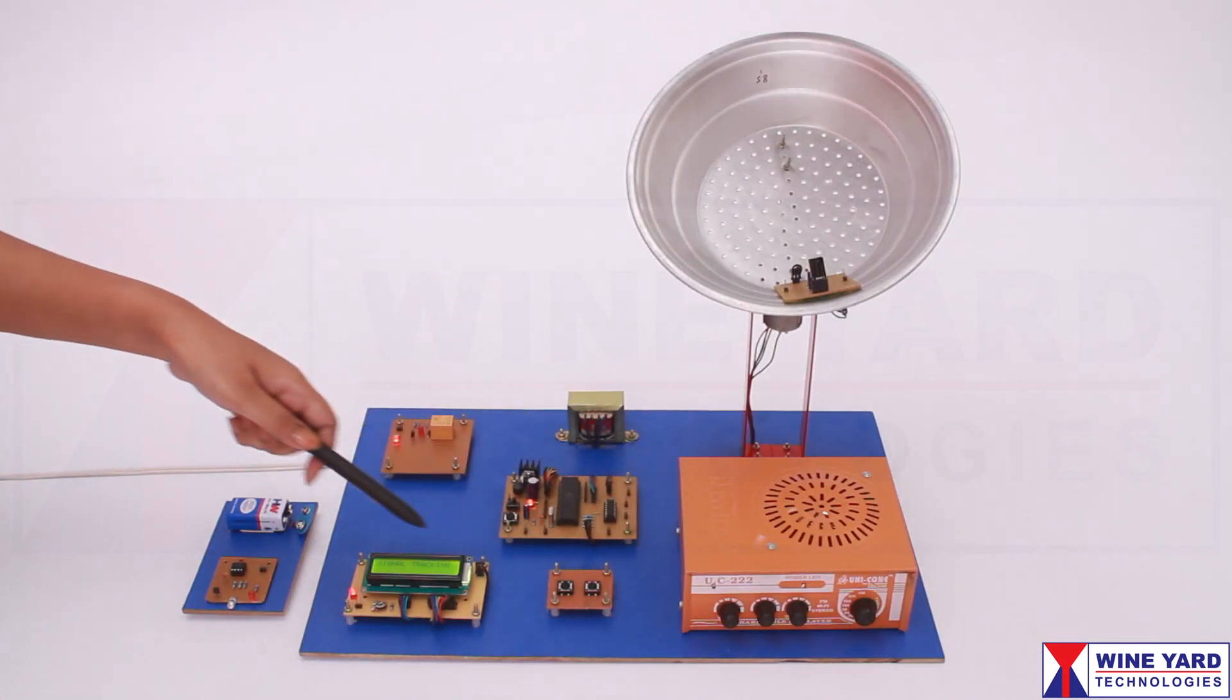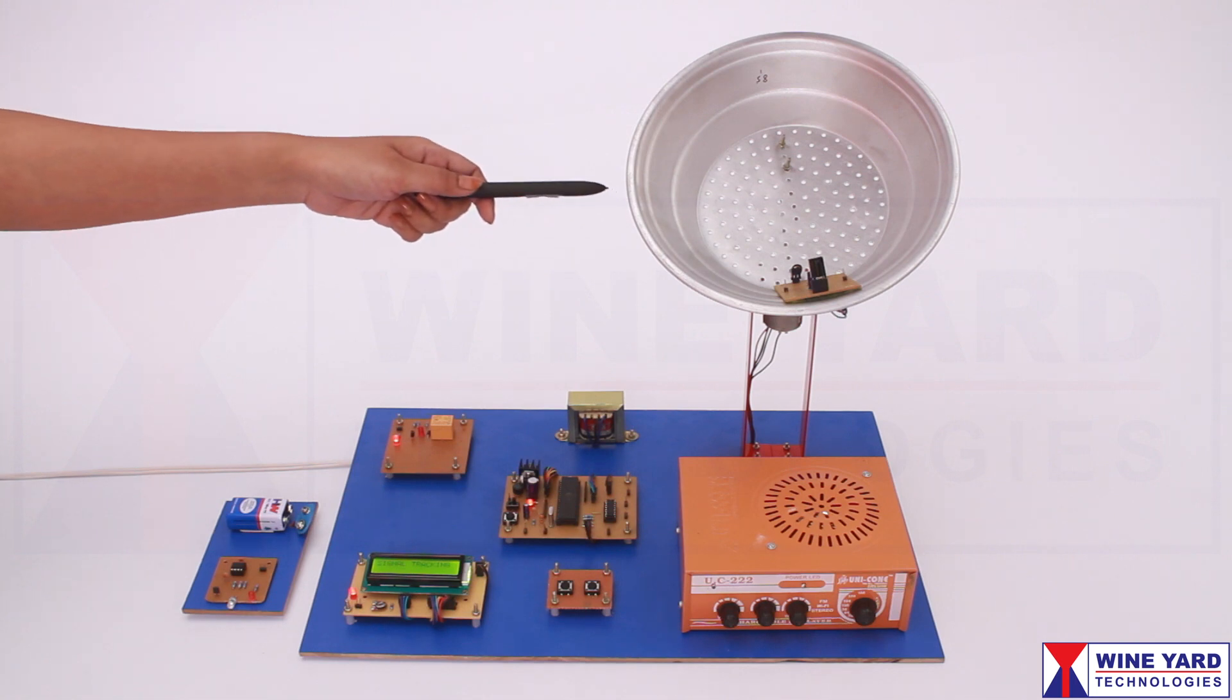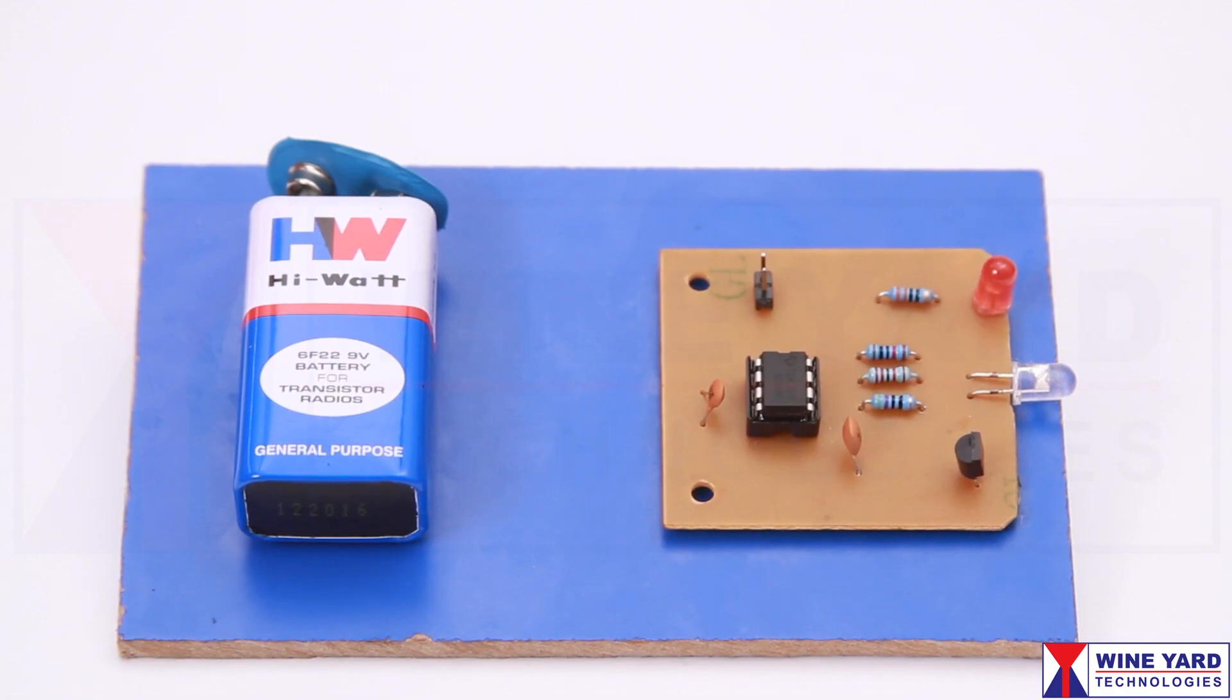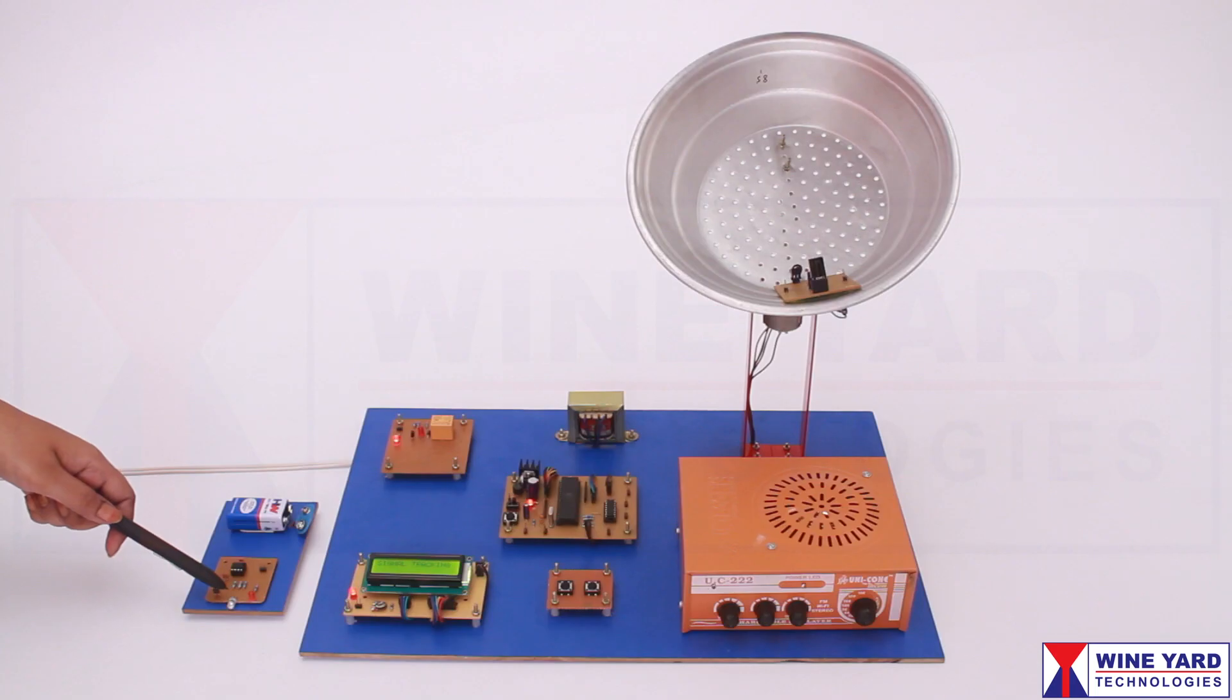This project is a user controlled rooftop antenna signal tracking system. Here we are using the IR transmitter for replication of electromagnetic signal waves.